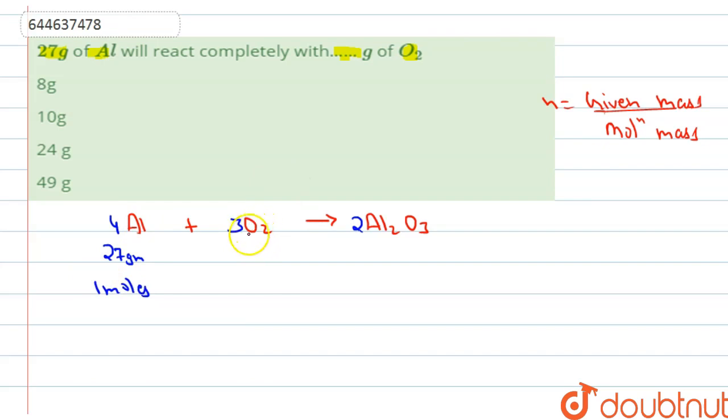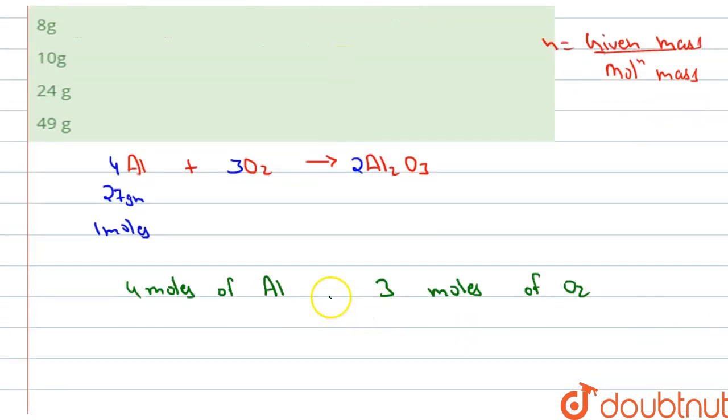We have to find out how many grams of O2 is required. According to the stoichiometric coefficient, 4 moles of aluminum need 3 moles of O2.